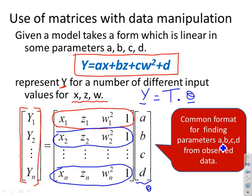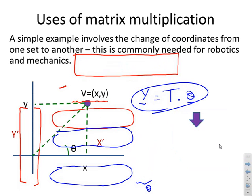This is a very common format for finding unknown parameters a, b, c, d for a model given you have observed data. It's a very compact way of representing the data.